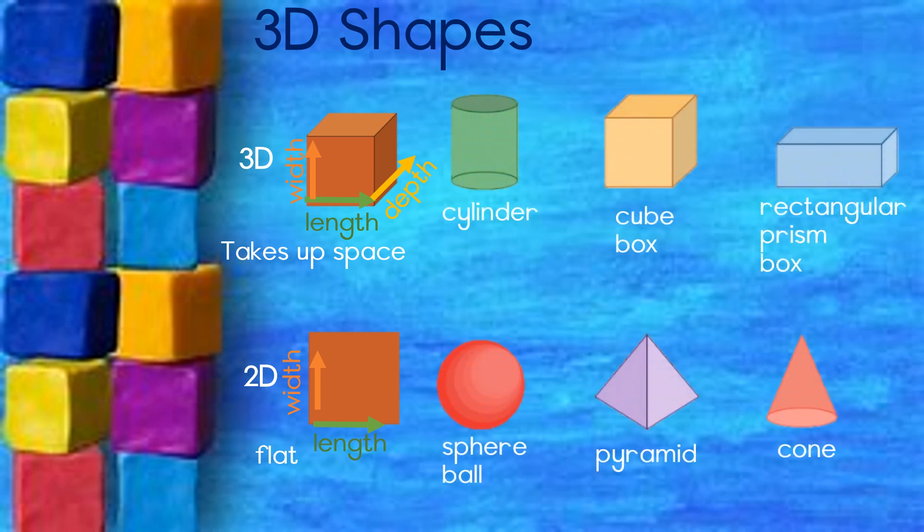A cylinder. A cube, which is in the shape of a box. A rectangular prism, which can also be a box shape. A sphere, also called a ball. A pyramid and a cone.